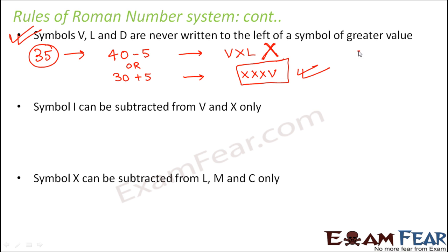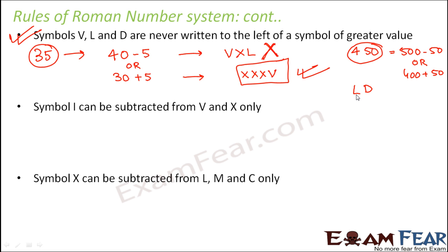Let us look at another example. To write 450 in Roman numerals, it can be written as 500 minus 50 or 400 plus 50. If you write it as 500 minus 50, that means writing L before D, which is not allowed since L cannot be written to the left of a greater symbol. So we represent it as 400 plus 50. 400 is 500 minus 100, which is CD. And 50 is L, written on the right hand side. So CDL is the correct Roman numeral for 450.